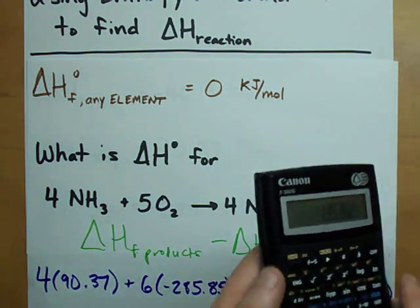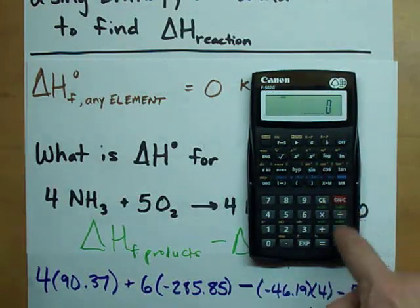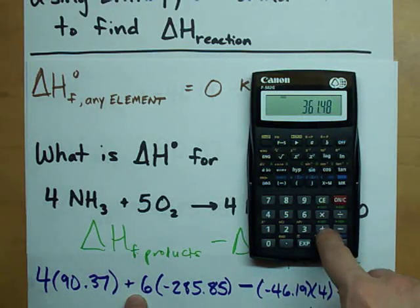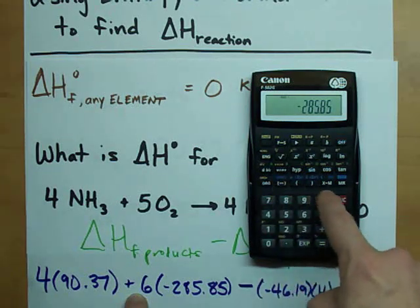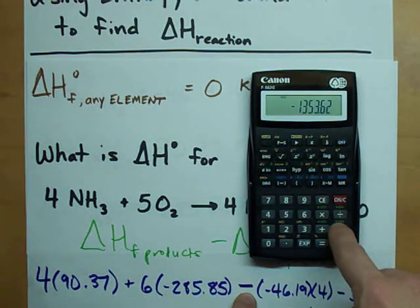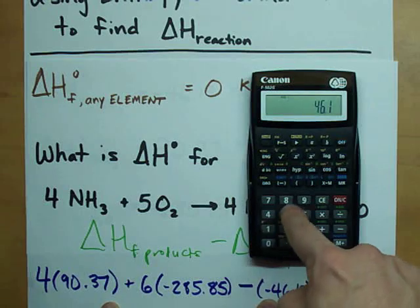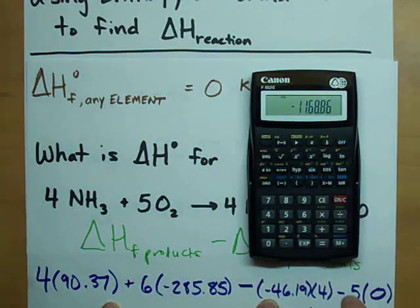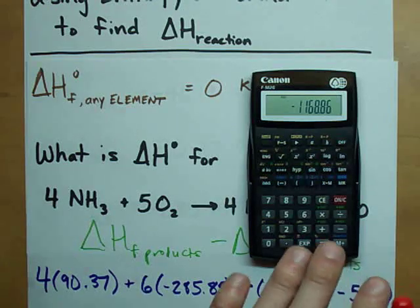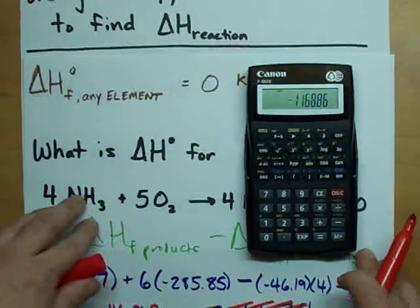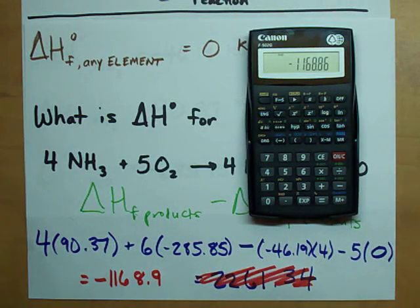So, when you do that on your calculator, let's do that on our calculators together. 4 times 90.37 plus 6 times negative 285.85 minus 4 times negative 46.19 minus 0. The answer that I get here is negative 1168.9. See? Negative 1168.9.